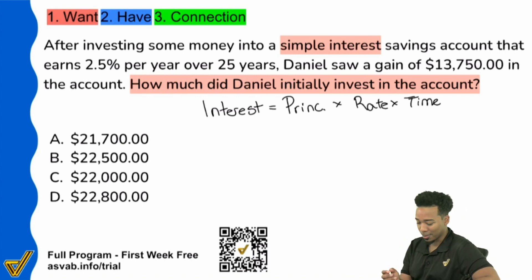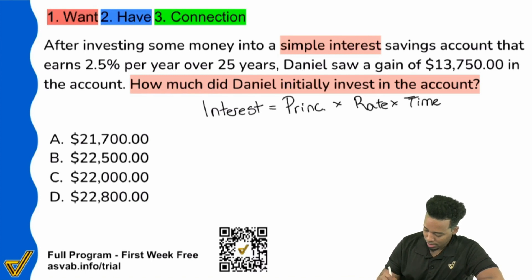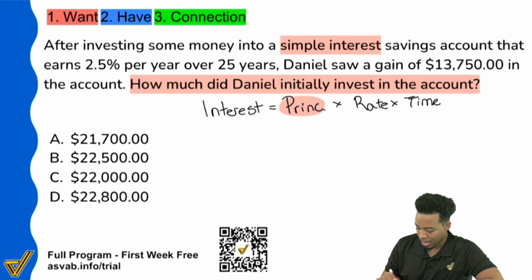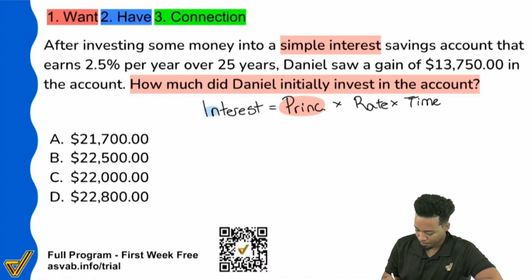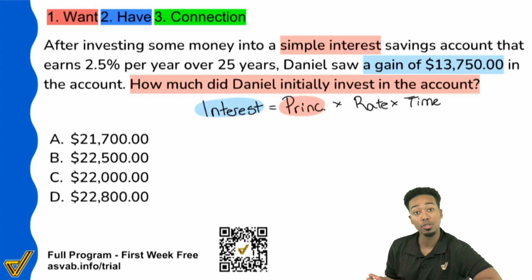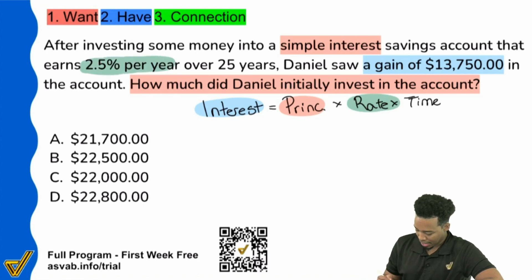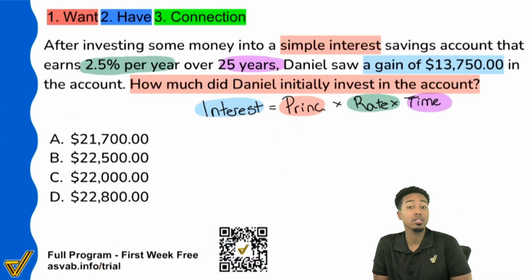Pay attention and write down what you need to. The interest — that's what we're looking for — and the principal is how much money we've initially invested. So I know that's what I'm looking for. What else am I given? My interest — the interest is right here: Daniel saw a gain of $13,750. That's how much money you earned from investing. Next, the rate is 2.5% per year, and the time is 25 years. So we have everything we need to solve this problem.